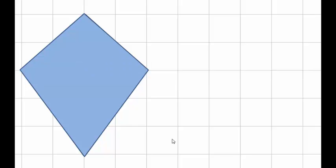So a kite is a two-dimensional shape. It's also a quadrilateral with four sides and it has two distinct pairs of adjacent sides. So we have this pair here and this longer pair of adjacent sides there.